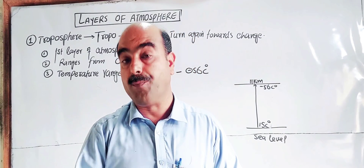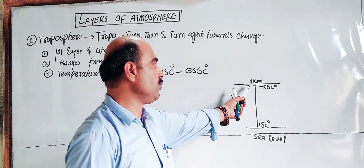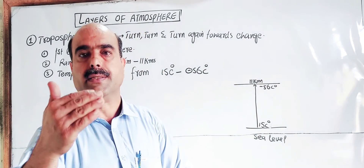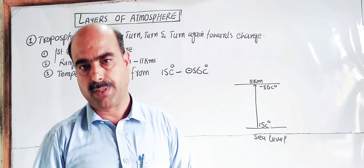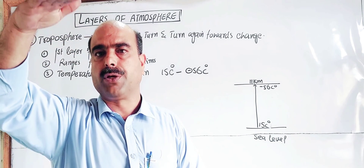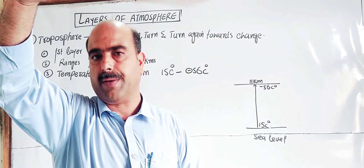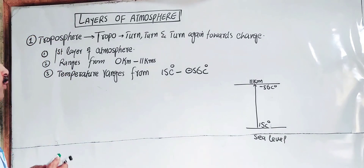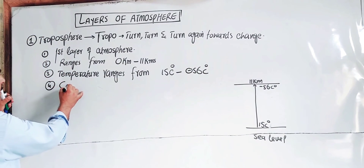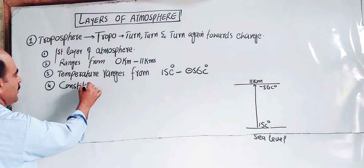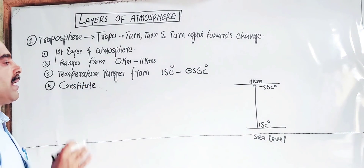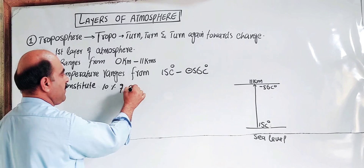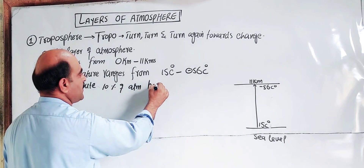The lapse rate describes how temperature changes with height. If temperature decreases with increasing height, the lapse rate is positive. If temperature increases with increasing height, the lapse rate is negative. In the troposphere the lapse rate is positive, meaning temperature falls as altitude increases.